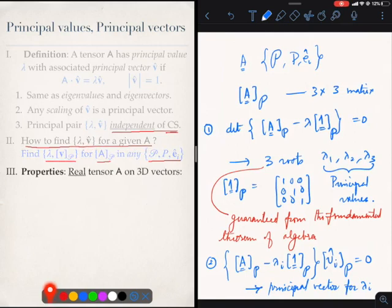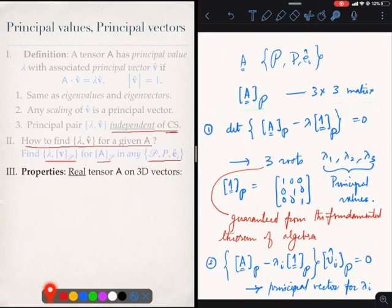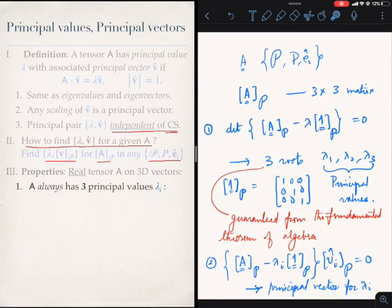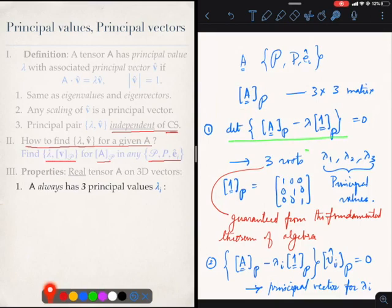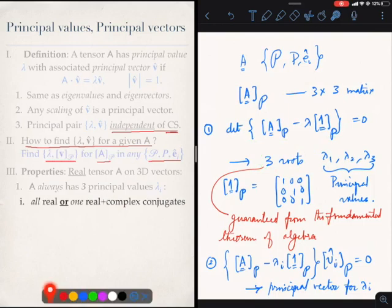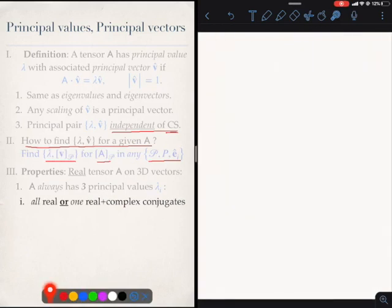What are the properties? Consider a tensor on 3D vectors. The matrix of A is a 3 by 3 matrix. Given that we have just seen that because of the process by which we find the principal values, you are guaranteed three roots, you are guaranteed three principal values lambda i.